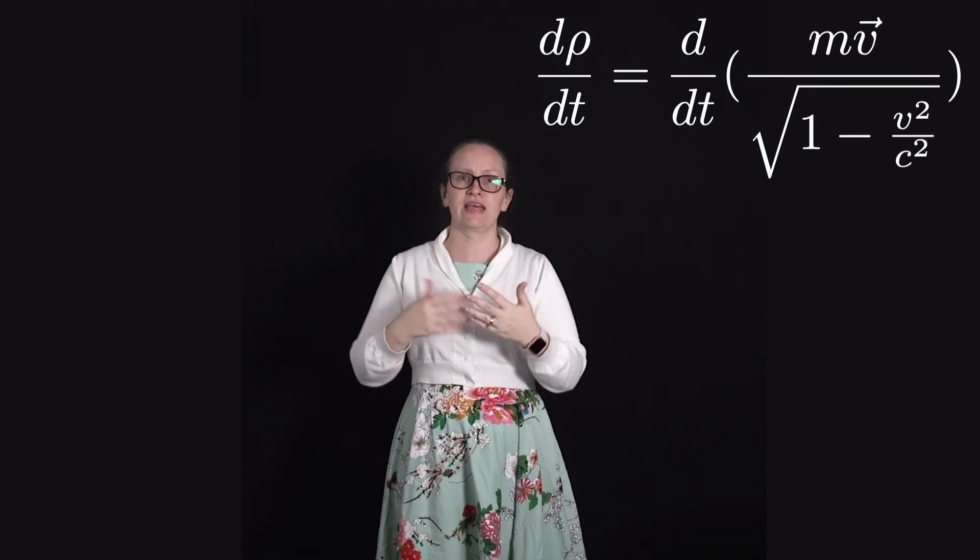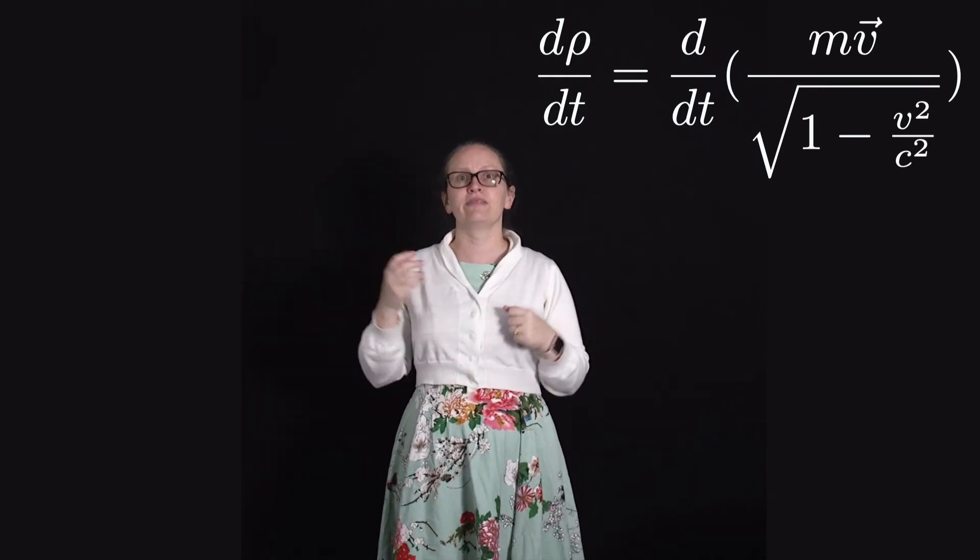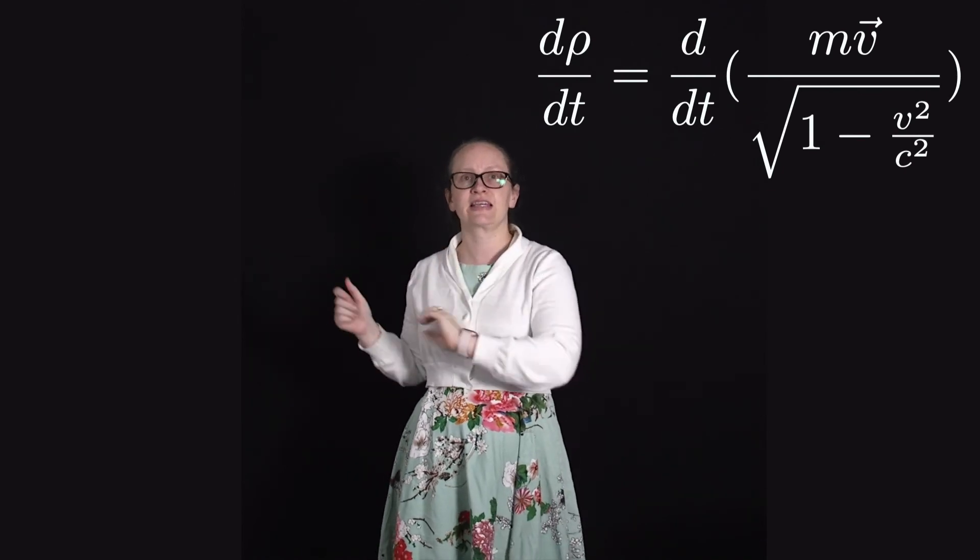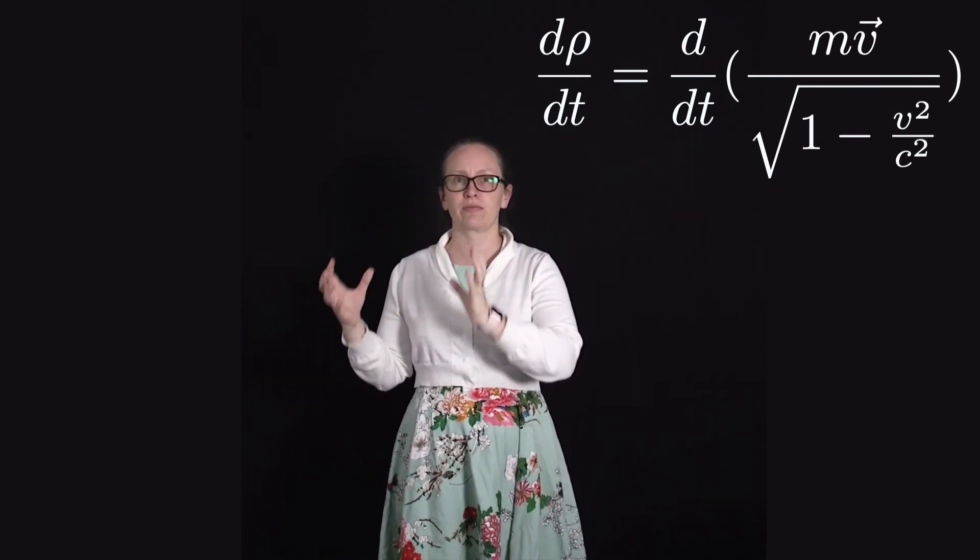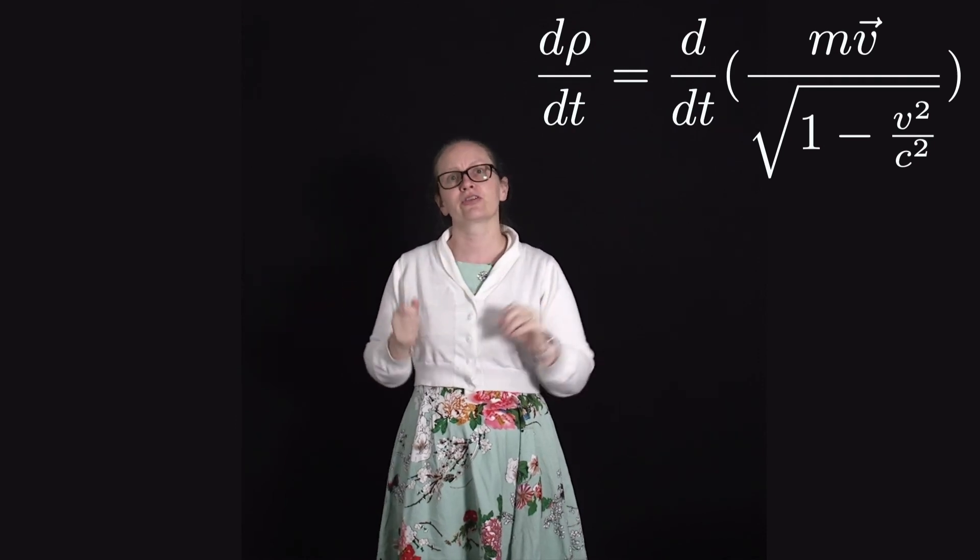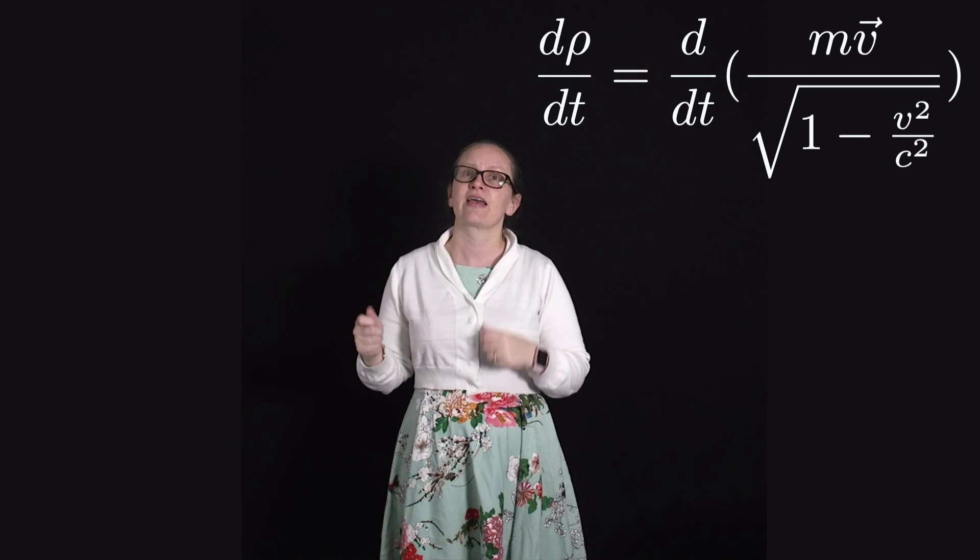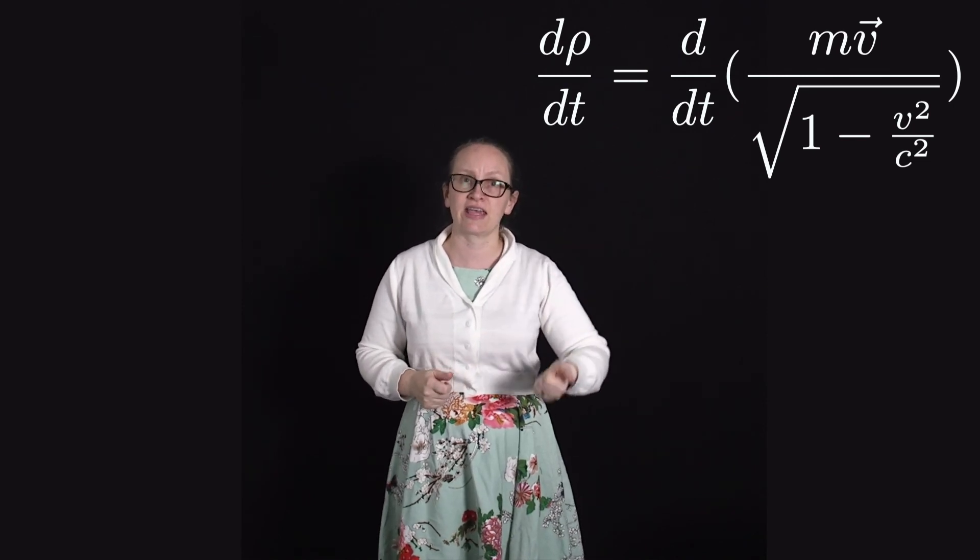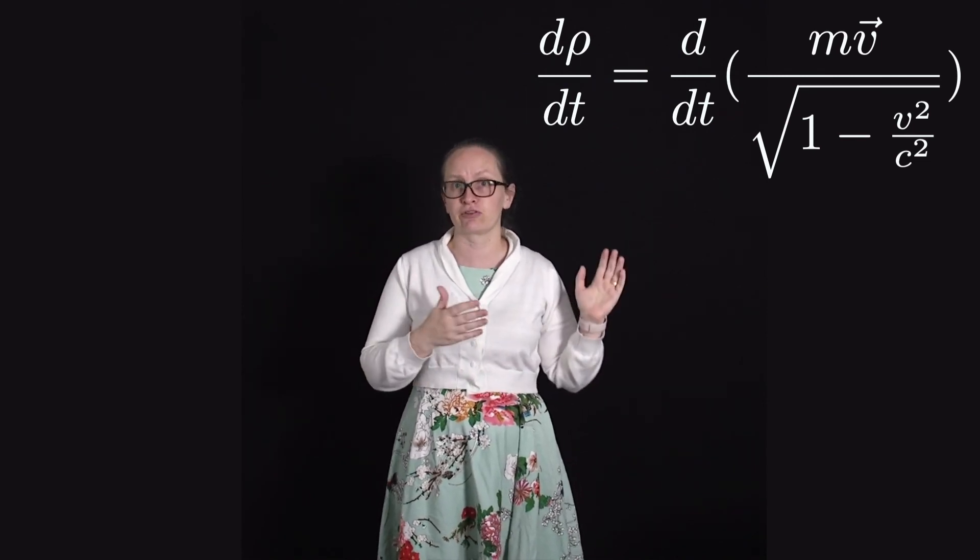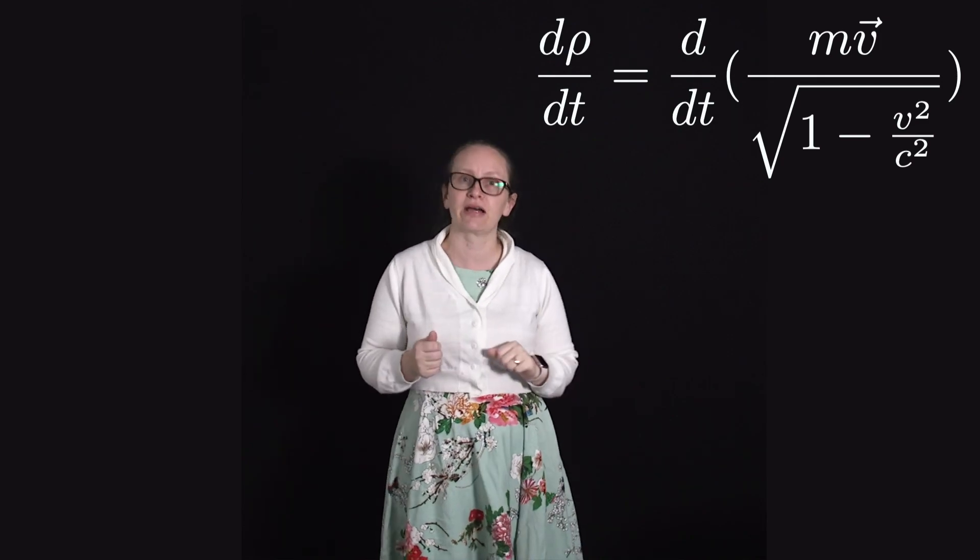So there's an asymptote when the velocity is c, then we've got a zero on the bottom of that equation there. So that is actually telling us that nothing which has mass can actually get to c. To get it to c we would have to apply an infinite amount of force.